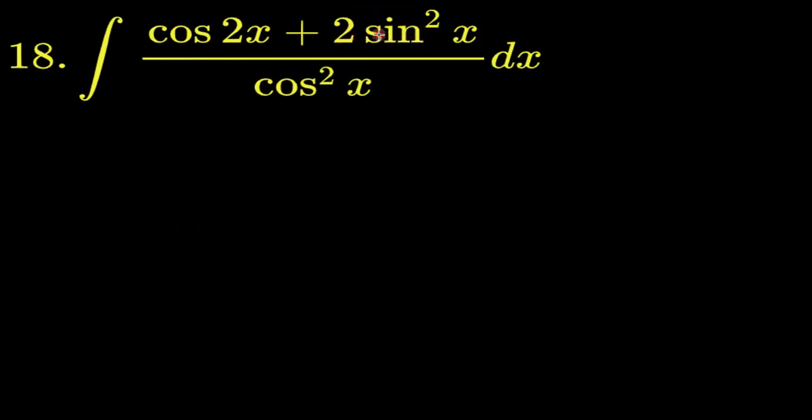Which can be written as 1. So it looks sensible to write cos 2x as 2 cos square x minus 1. That's what we are going to do.